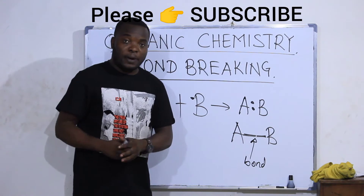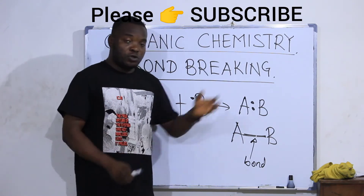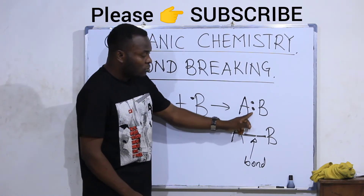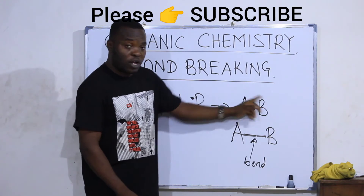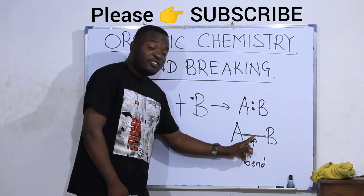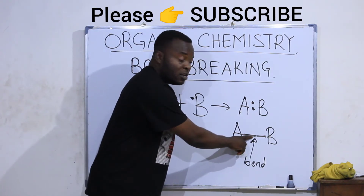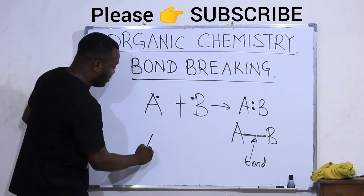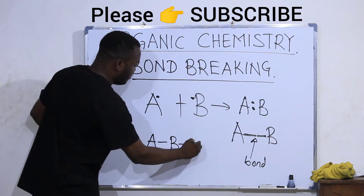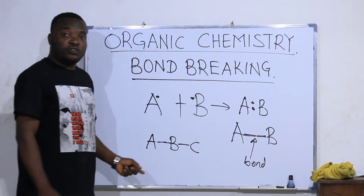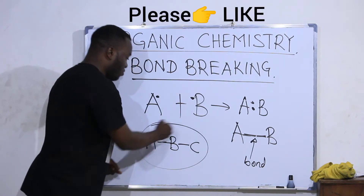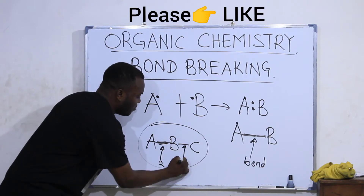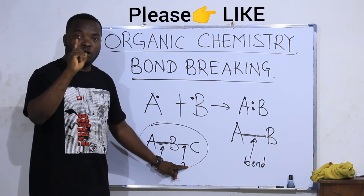In covalent bonding, it is all about one atom bringing an electron and the other atom bringing one too, and the two now share. The electrons being shared, which were donated by the two atoms, are used to form this bond. This simply means that every single bond you see in chemistry represents two electrons. So if I have a substance like A–B–C, this bond here represents two electrons, and this bond here also represents two electrons. A single bond represents two electrons.